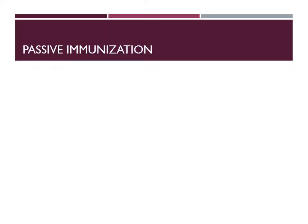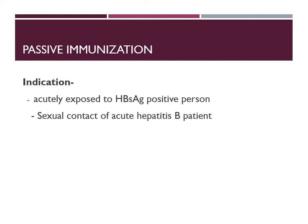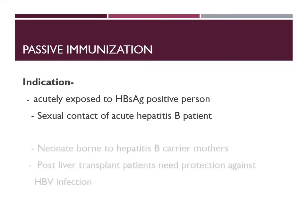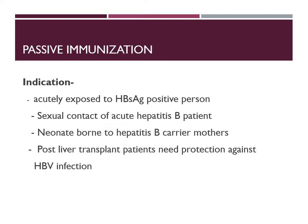Passive immunization means antibodies have already been prepared and can be provided immediately when needed, making it useful in emergency situations. These are ready-to-use antibodies, also called immunoglobulins. The indications for passive immunization include: acute exposure to an HBsAg-positive person, sexual contact with a hepatitis B positive person, a neonate born to a hepatitis B carrier mother, or post liver transplantation.